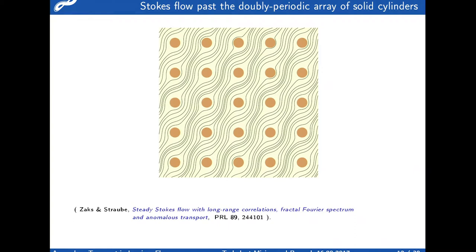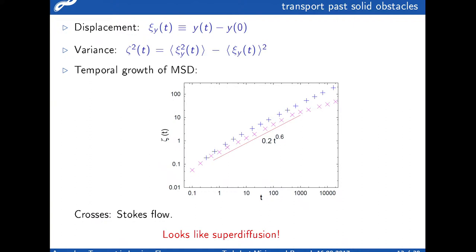Again, you can show that if you study the transport properties of this flow, just measure Fourier spectrum and autocorrelations, you would see that autocorrelations display power law decay and the spectrum sits on a fractal set. As for transport, you see something which looks like weak superdiffusion, slightly larger than 0.6. That's how the variance in the ensemble of particles grows.